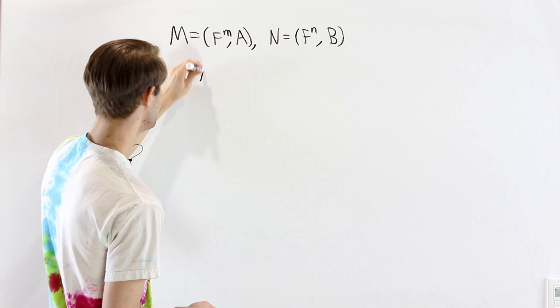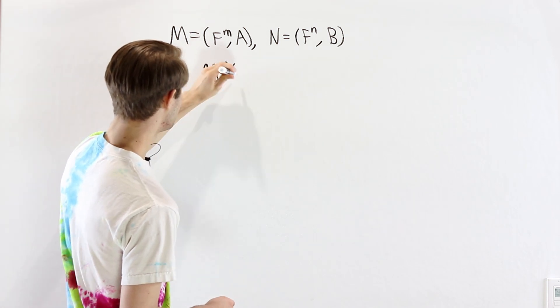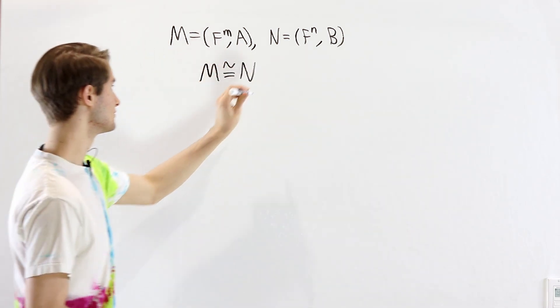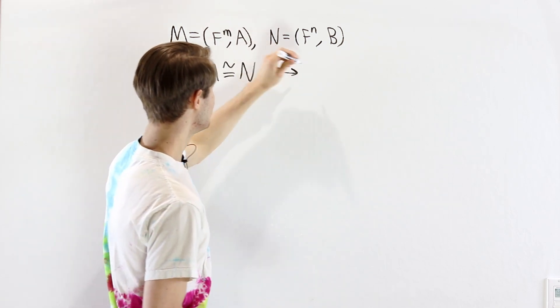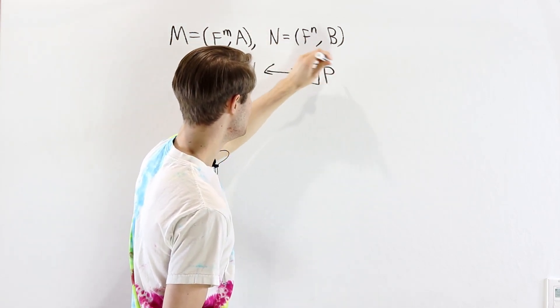Our goal is to show the following statement: M is isomorphic to N, this is as F[x]-modules, if and only if there exists some matrix P.